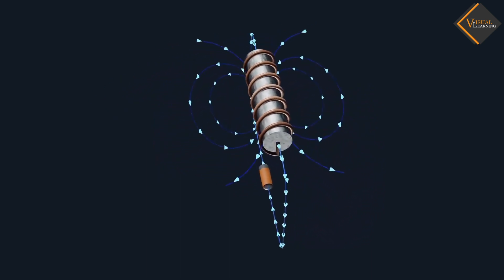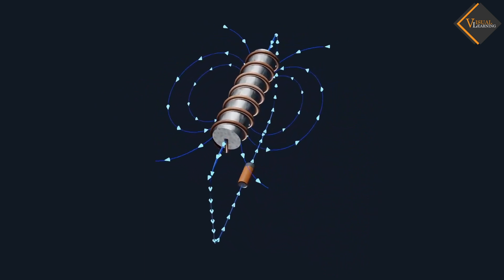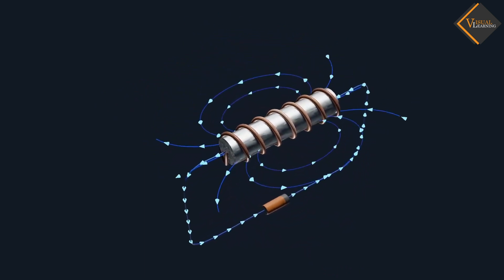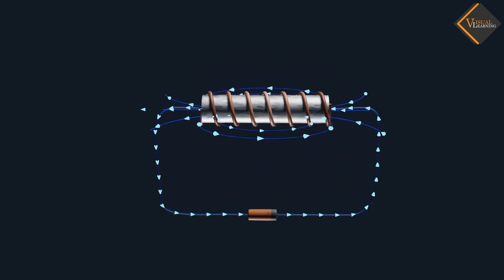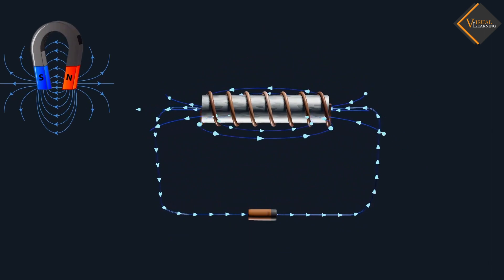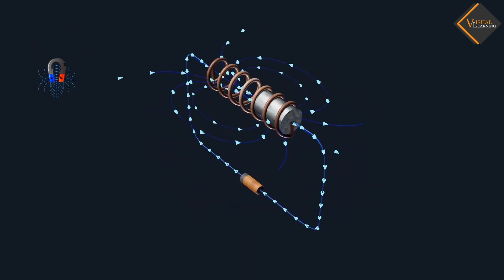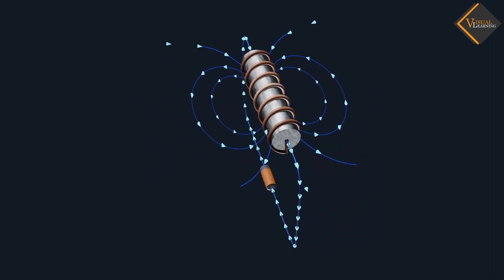The magnetic field produced by the solenoid can be controlled by changing current value. And this gives us an advantage over the bar magnet or any other permanent magnets. This whole construction so formed is called an electromagnet.